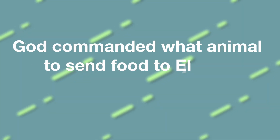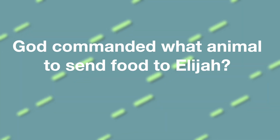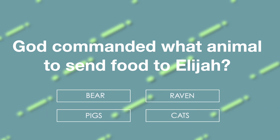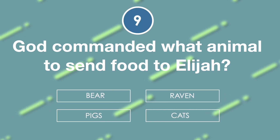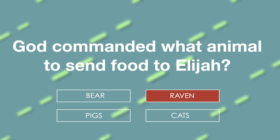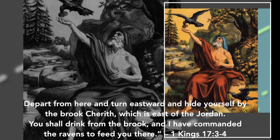God commanded what animal to send food to Elijah? Is it bear, ravens, pig, or cats? The answer is ravens. 'Depart from here and turn eastward and hide yourself by the brook Cherith, which is east of the Jordan. You shall drink from the brook, and I have commanded the ravens to feed you there.' 1 Kings 17 verses 3 to 4.